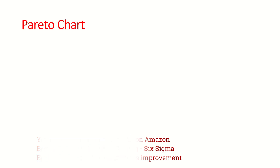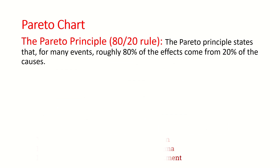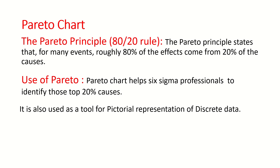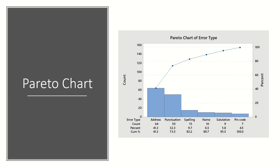The next tool is Pareto chart. Pareto chart works on the 80-20 rule — roughly 80% of the effects come from 20% of the causes. Pareto chart can help Six Sigma professionals identify the top 20% of the causes. It is also a tool used for pictorial representation of discrete data, helping you identify those 20% causes which are responsible for 80% or more of the problems.